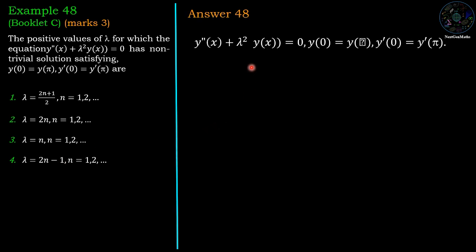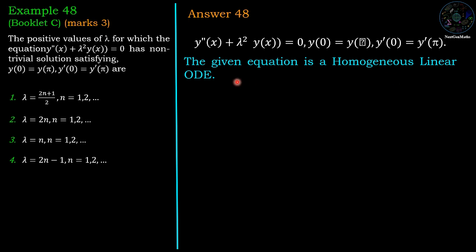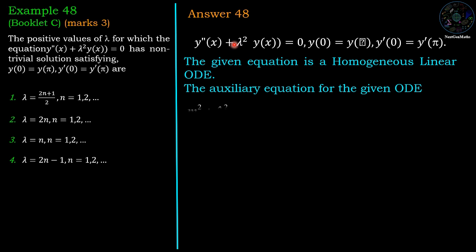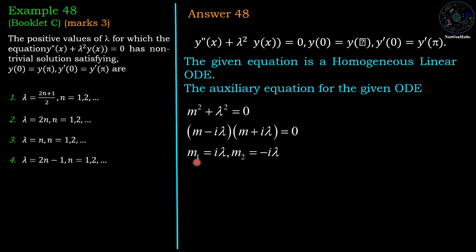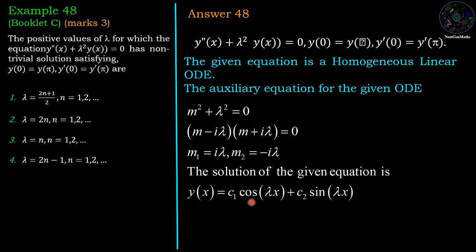The given differential equation is a homogeneous linear ODE, so the auxiliary equation is m² + λ² = 0. Factoring gives (m − iλ)(m + iλ) = 0, so m₁ = iλ and m₂ = −iλ. These are complex conjugates, so the general solution is y = c₁cos(λx) + c₂sin(λx).